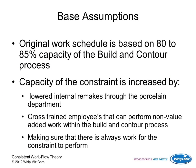We're looking at the fact that 80 to 85% of the capacity of the build and contour process is where we're trying to figure out exactly what our pace setter becomes. Then we're going to subordinate all the rest of that process to that particular level. We're going to lower internal remakes through that porcelain department to help that process. Cross-training — if we can cross-train people who can perform a lot of the functions within that build and contour process, we can alleviate some of that constraint.